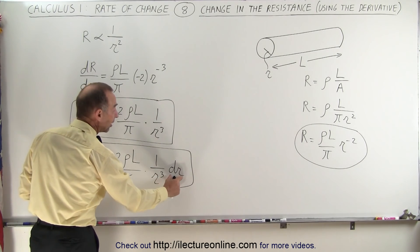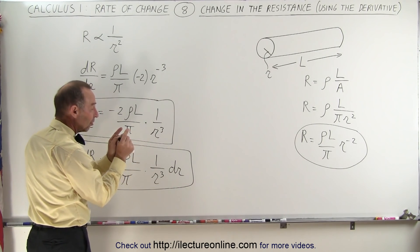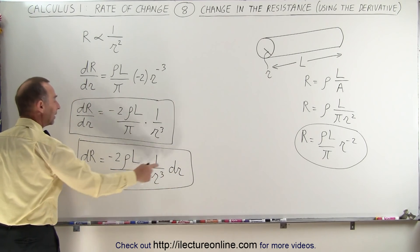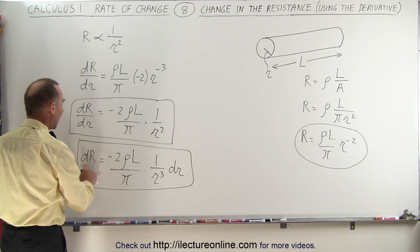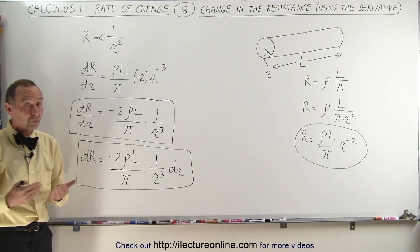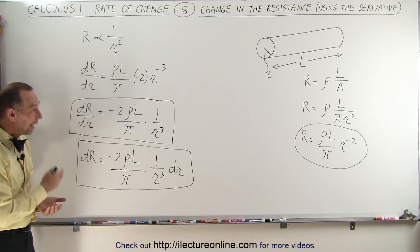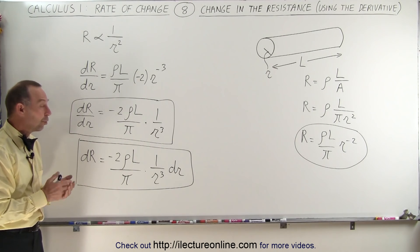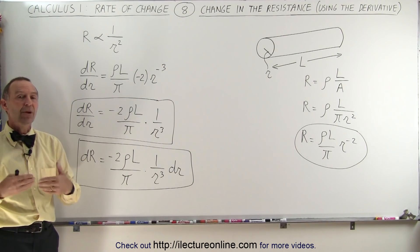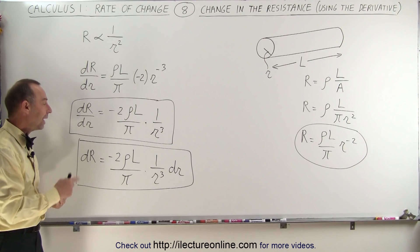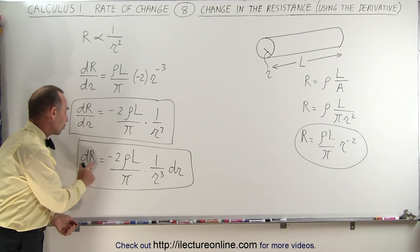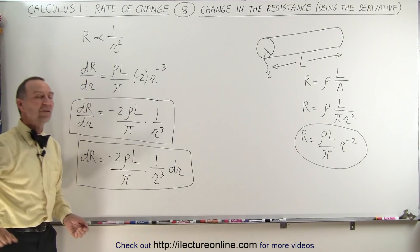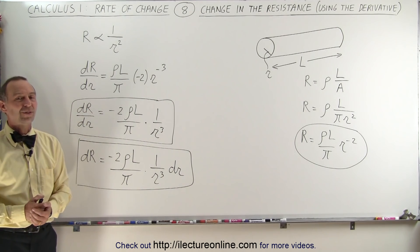But if the change is negative — in other words, if the radius is getting smaller and dr is a negative quantity — then the two negatives cancel out and we'll have a larger resistance. So it does appear to work. And that's how we deal with derivatives and differentials. We can see how much resistance changes with respect to the radius, and we can calculate the actual change if we know how big the radius is and how much the radius is changing. And that's how it's done.